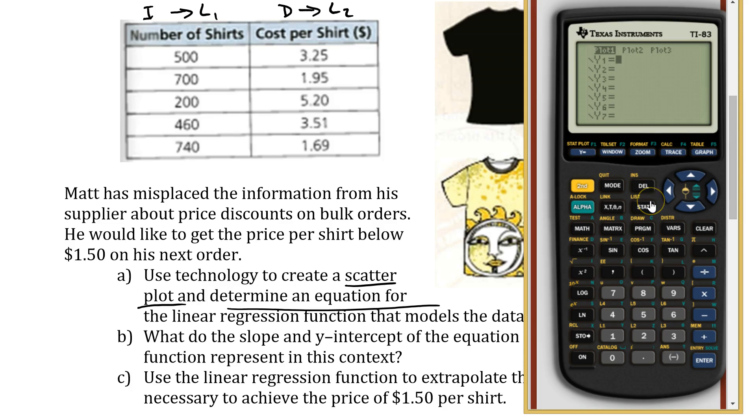I'm going to go into my lists, my table. So I go stat and then enter. I'm going to enter 500, 700, 200, 460, 740. Now I'm going to put in my next one: 3.25, double check, all good. 1.95, double check, good. 5.20, double check, we're good. 3.51, double check, yep, good. 1.69. I put 1.96 in the last video. Very easy mistake. I've double checked everything. Everything looks good.